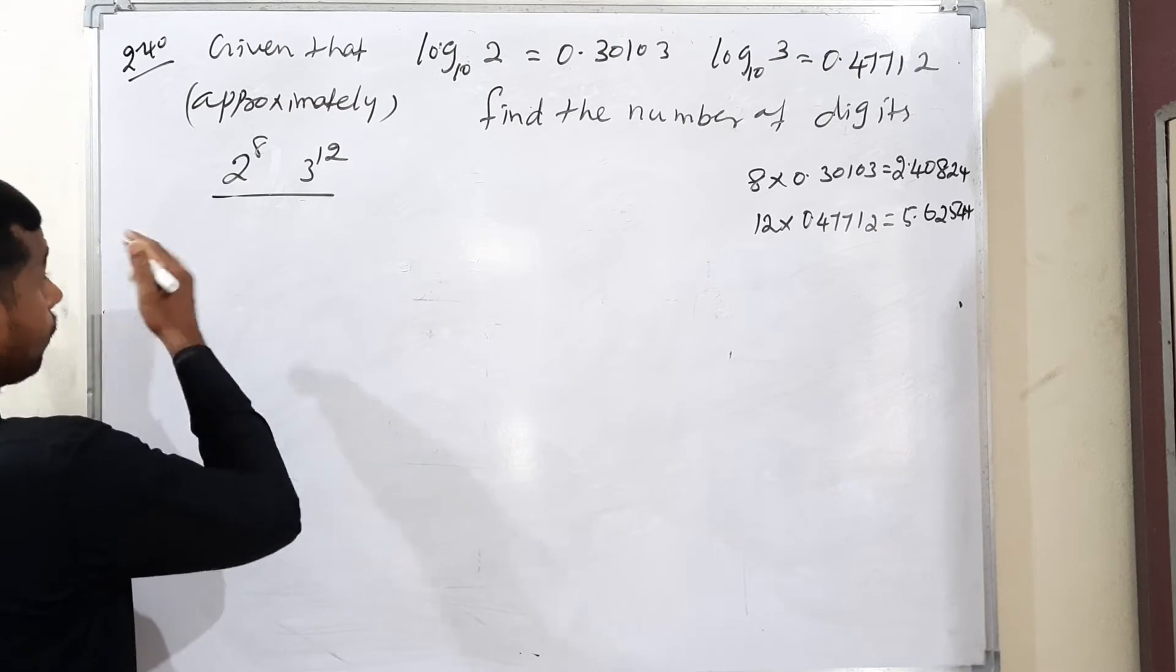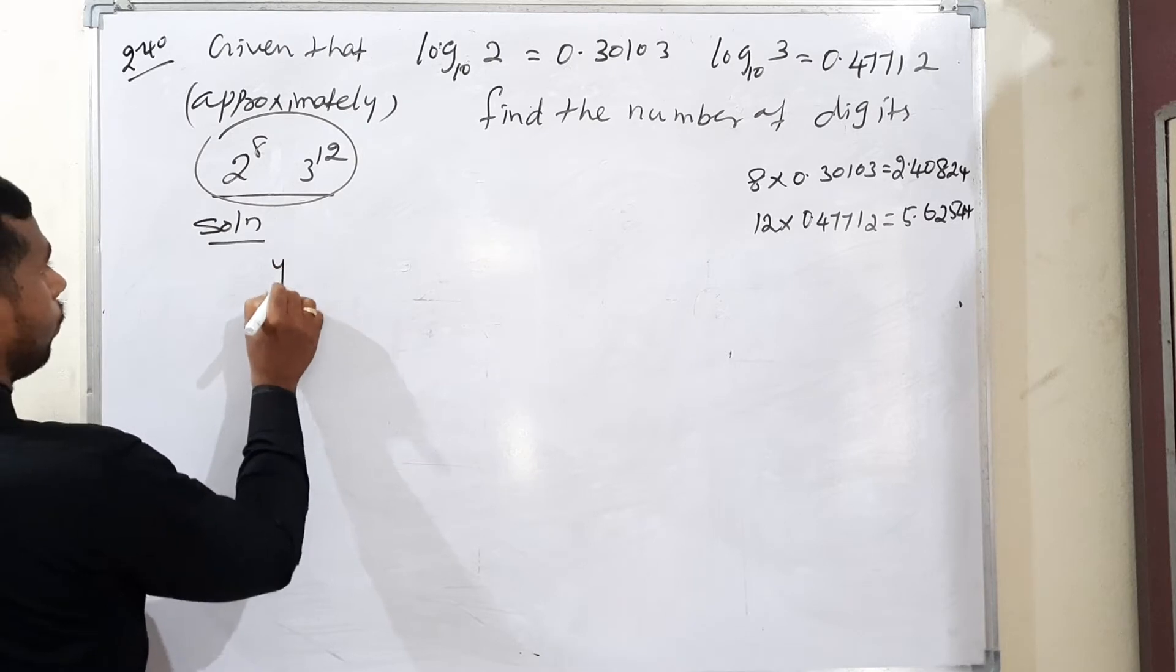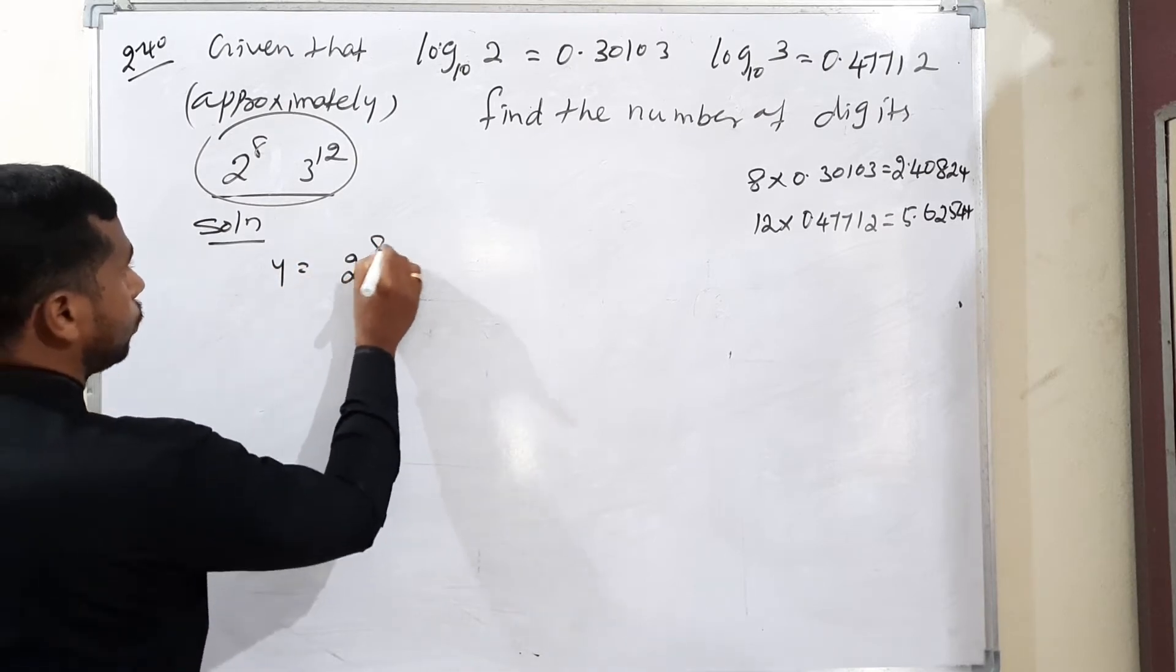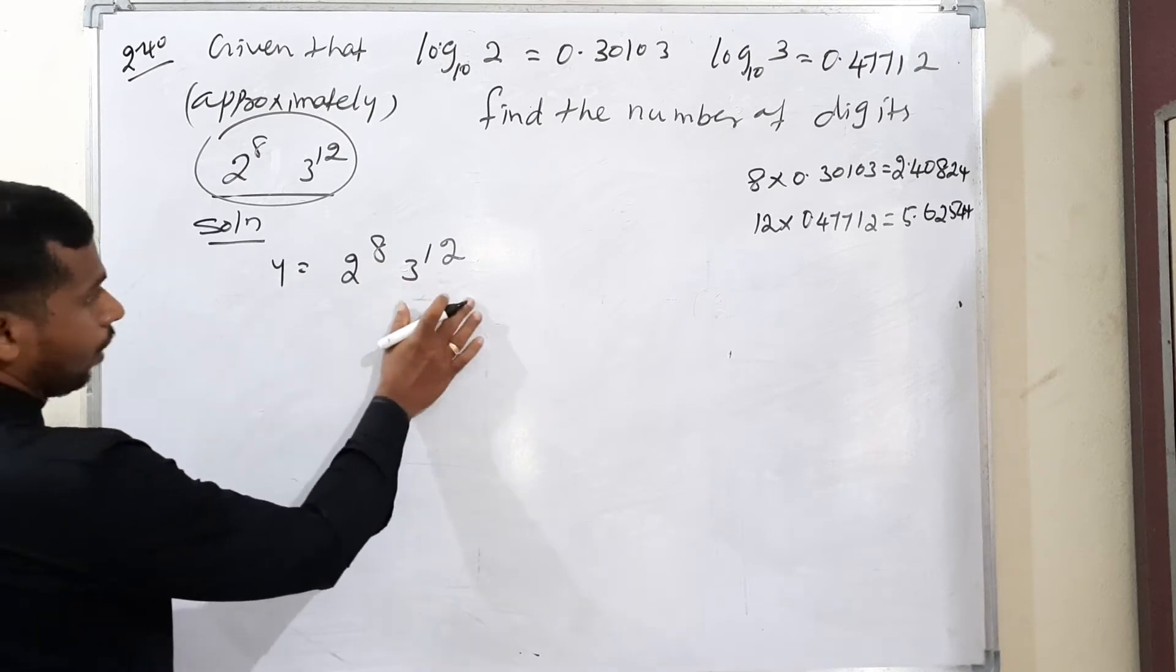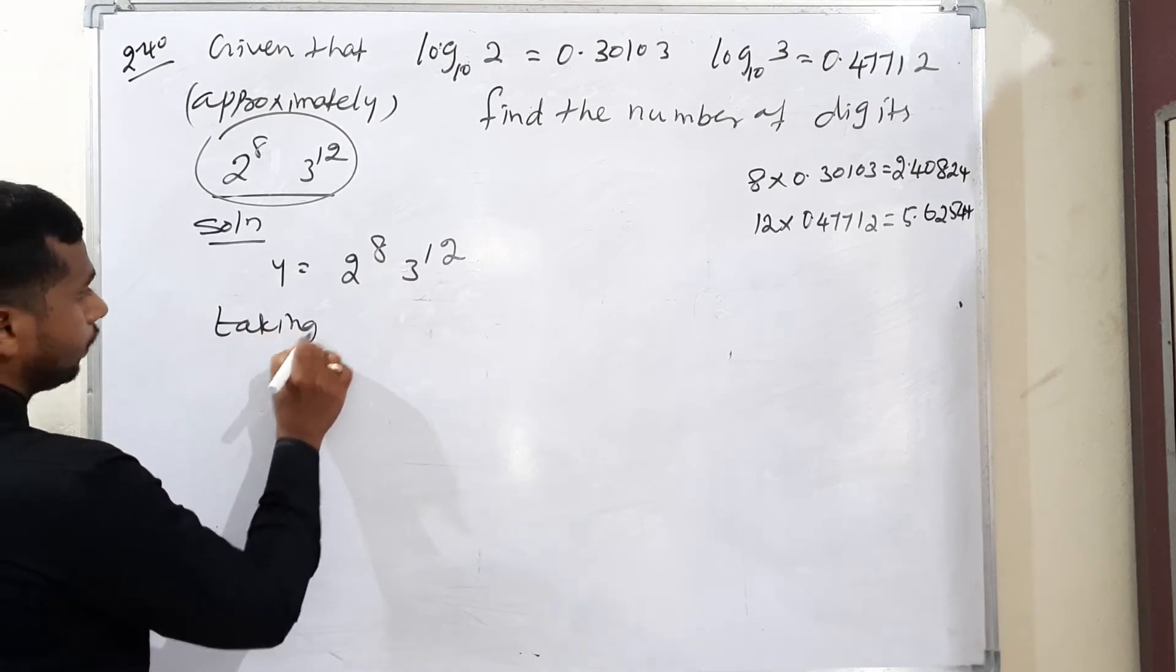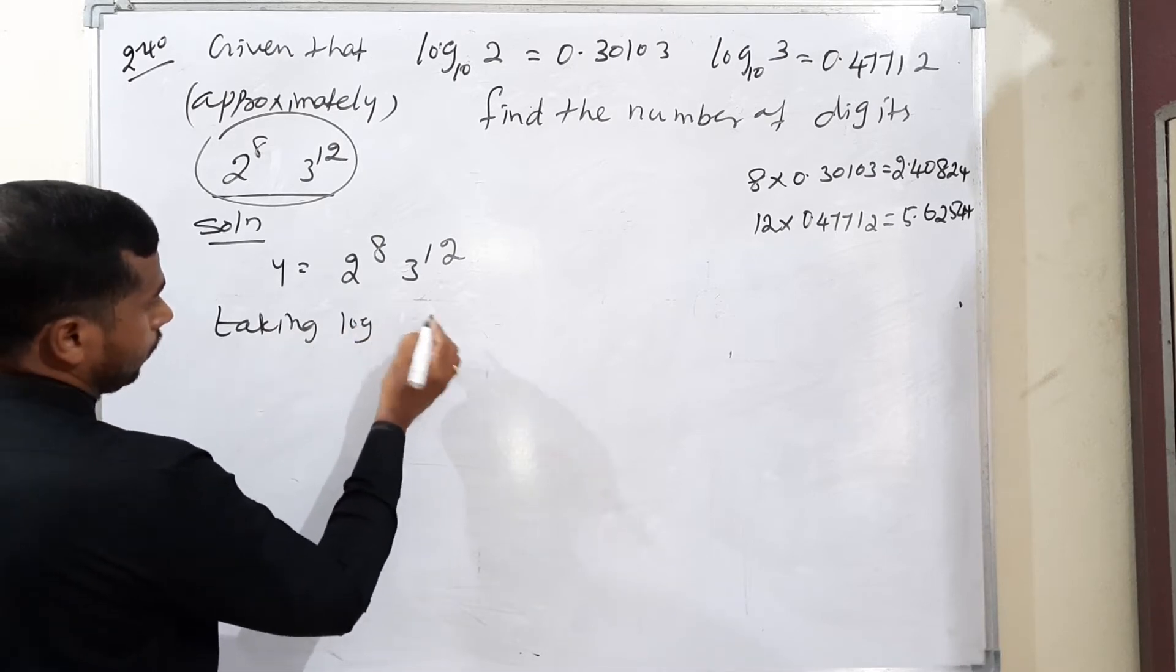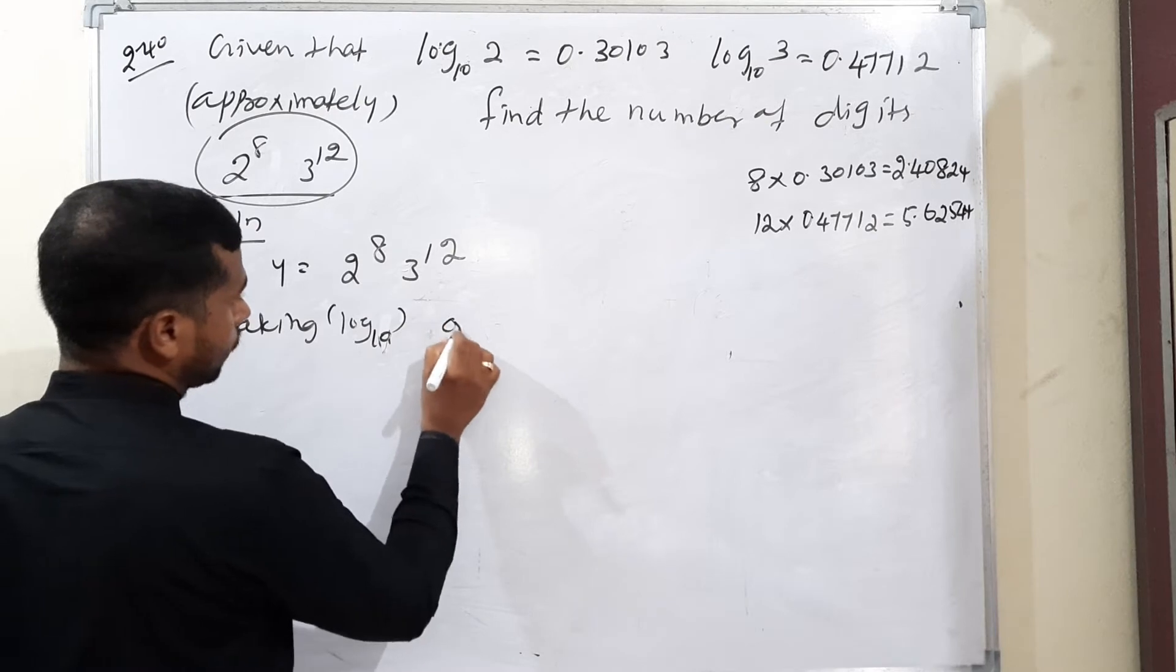Solution: Let y equal 2 to the power 8 into 3 to the power 12. Taking log on both side, base 10 on both sides.